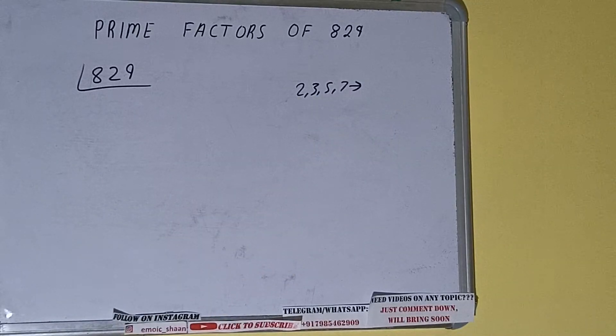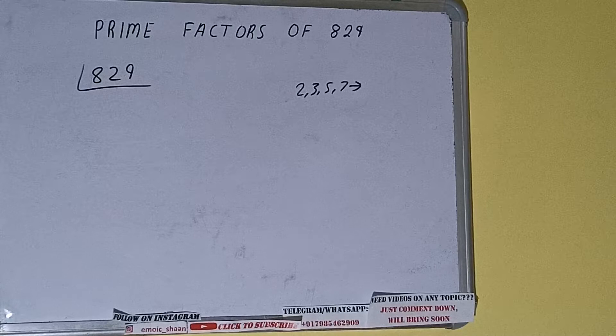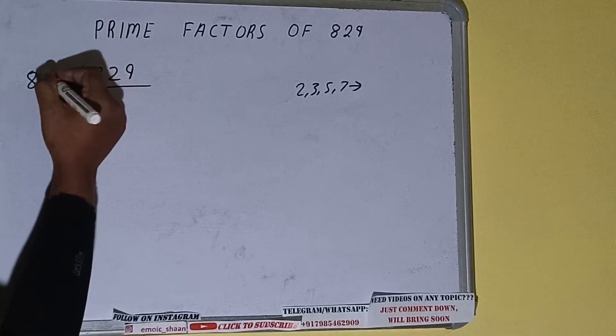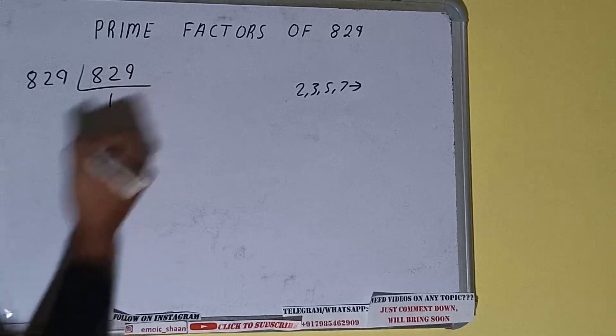If we talk about the number 829, the number 829 is also a prime number. So it is only divisible by itself, that is 829, and once we do so we will be getting 1.